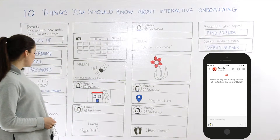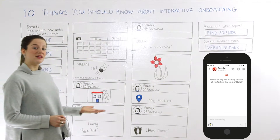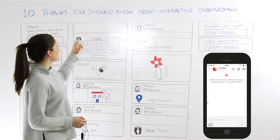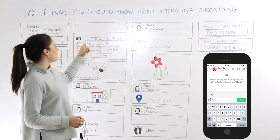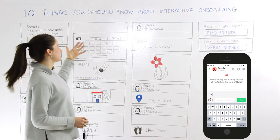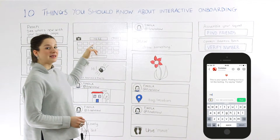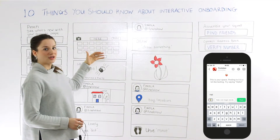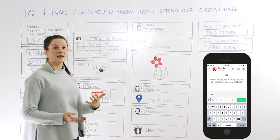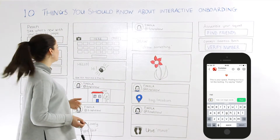Then they start telling you what to do. Posting to it is a lot like saying hello, and they advise you to say hello. As you start typing, you're prompted with other functionality that the app offers — for example, you can add your current location. So you're learning as you go, discovering what the app is all about.